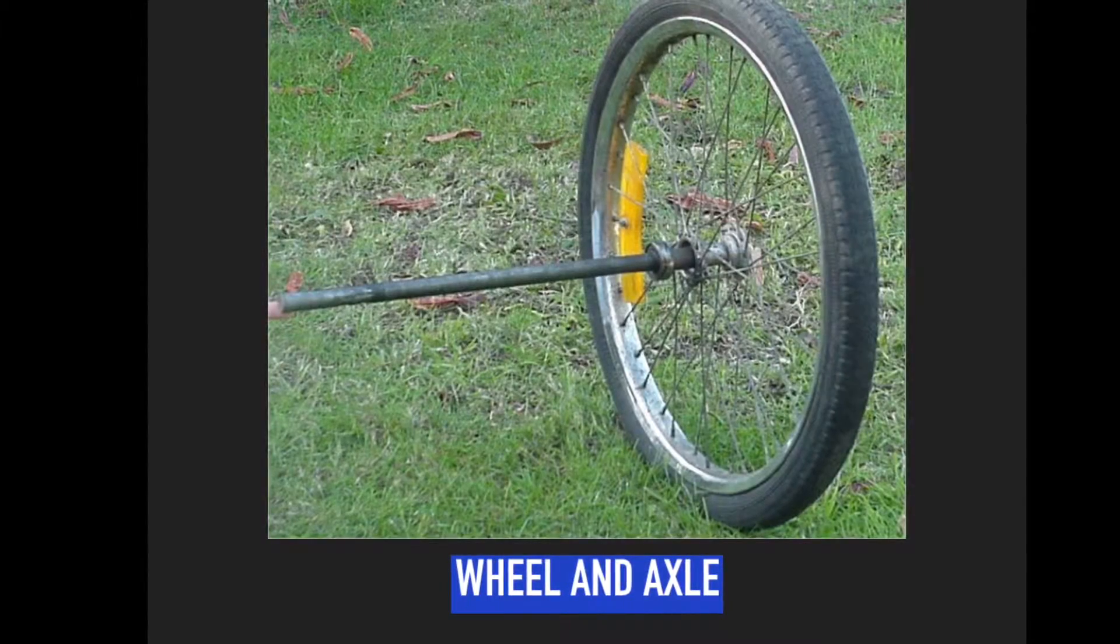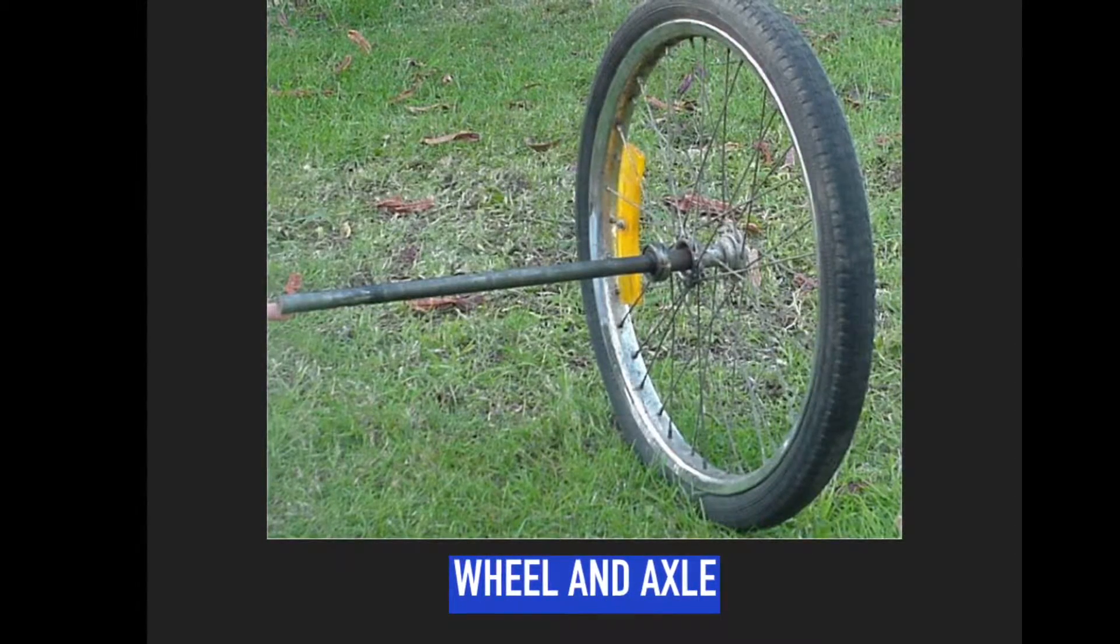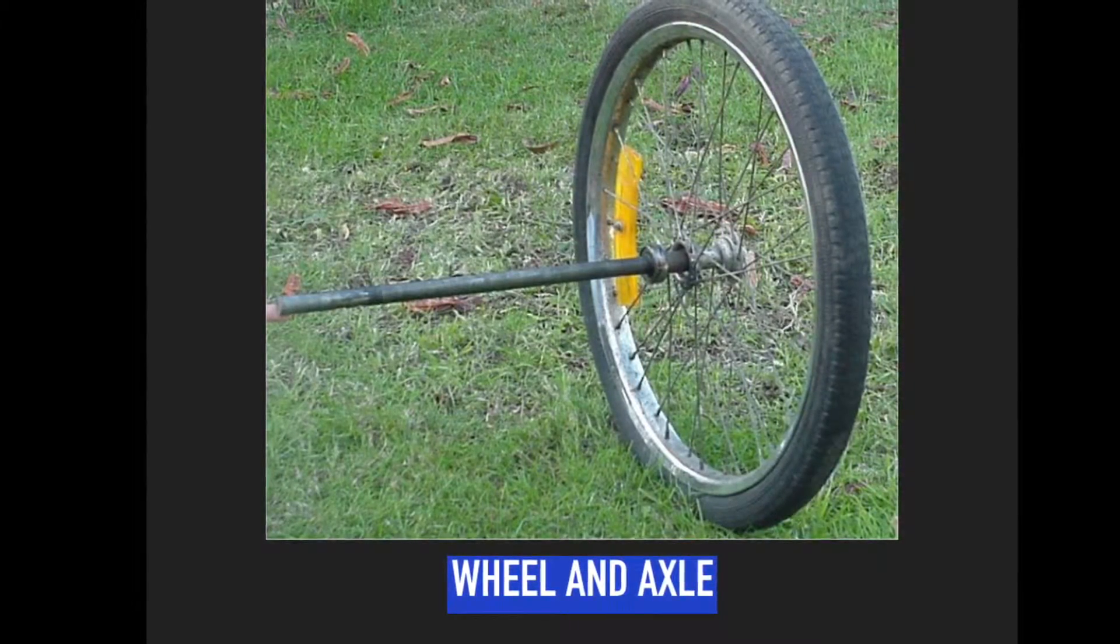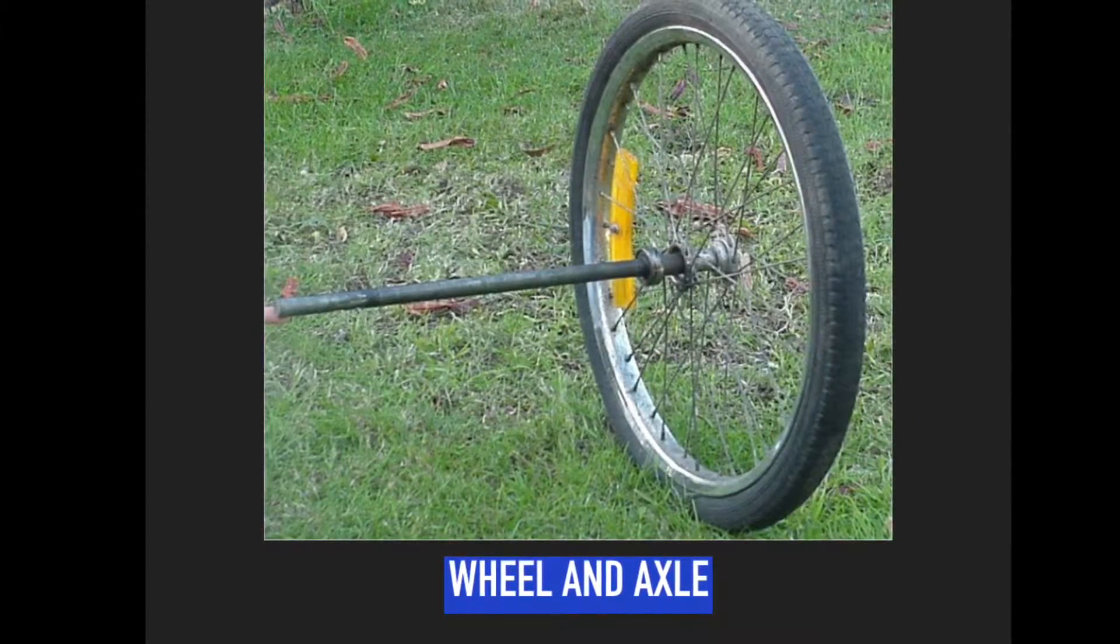A wheel and axle is used to move loads. This is the most common simple machine used in everyday life. They are used in cars, bicycles, and even airplanes.